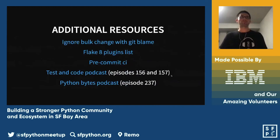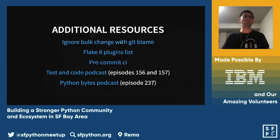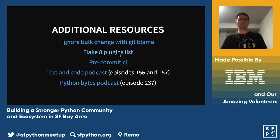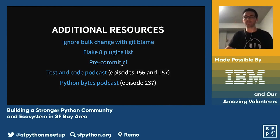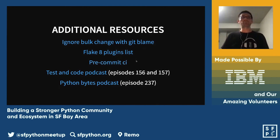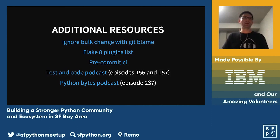Some additional resources: the first link shows how to ignore a big reformatting commit in git blame so you can skip through it and see what was there before. There's also an awesome Flake8 plugin list on GitHub, and pre-commit CI developed by Anthony Sottile — the creator of pre-commit — which is very fast, cheap, and free for open source. Finally, check out Testing Code podcast episodes 156 on Flake8 and 157 on pre-commit, and a Python Bytes episode about pip-tools by Michael Kennedy and Brian Okken.